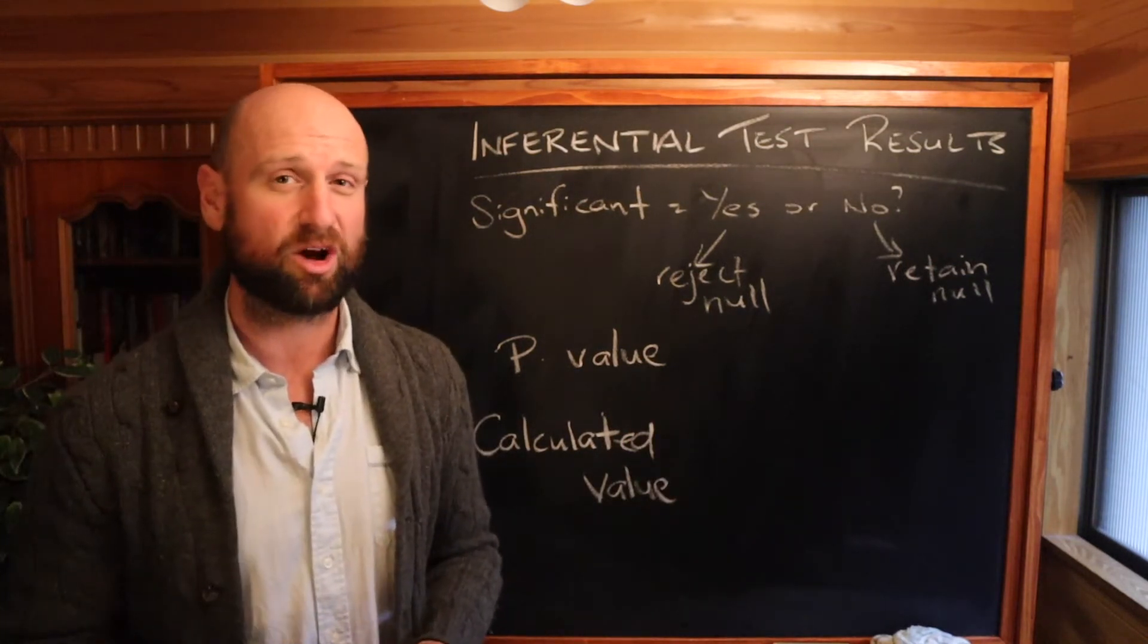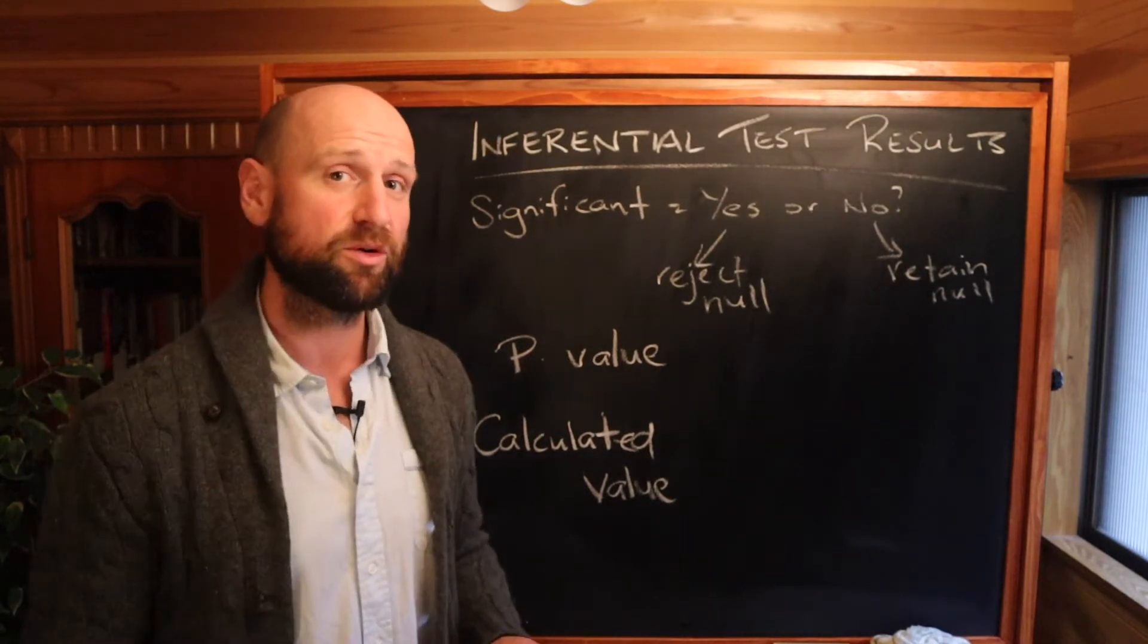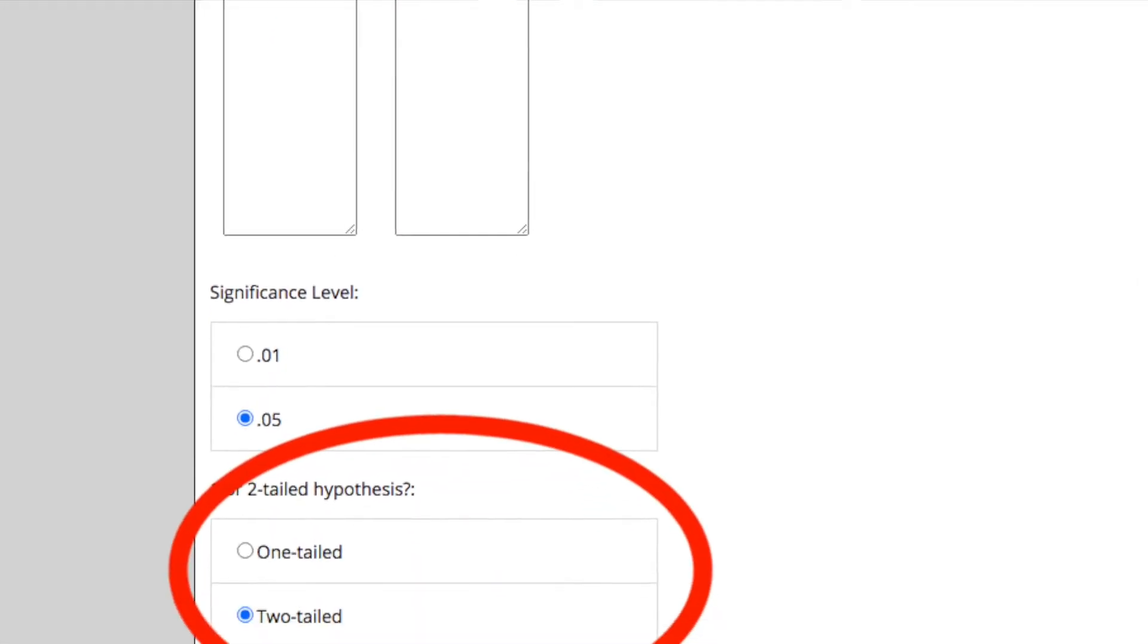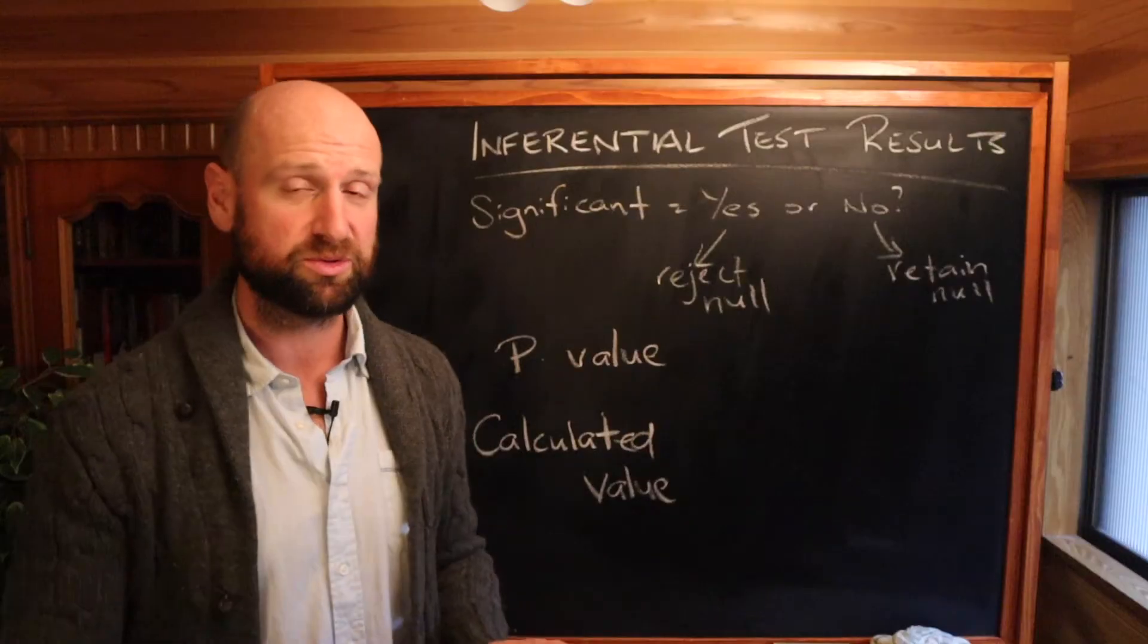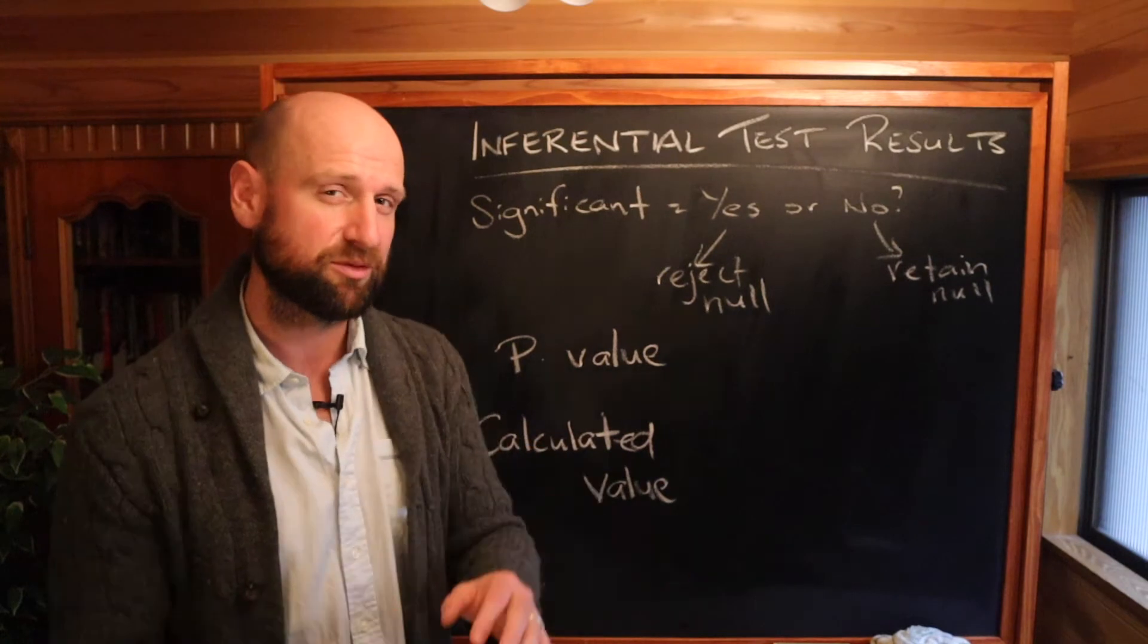Now with the social science calculator I'll just point out, be careful, the default is a two-tailed test. In a separate video I'll explain if you should do a one-tailed or a two-tailed, but I'm almost certain you're going to be doing a one-tailed test so just be careful to select the right one.